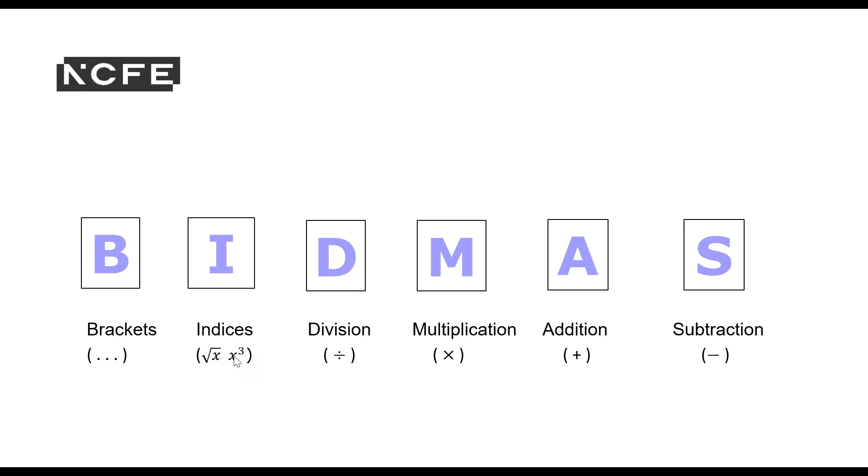So this is to the power of three. And we've got the square root here. So it goes brackets, indices. Then you do division. Then you do multiplication. Then addition. Then subtraction. But as somebody stated on the Jamboard, the addition and subtraction are kind of on a par with one another. And the division and multiplication are also on a par with one another. But it is important that you do the division first.